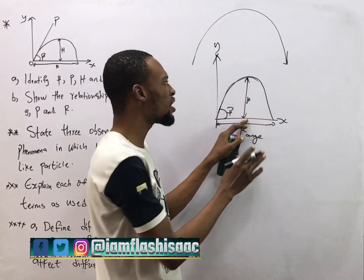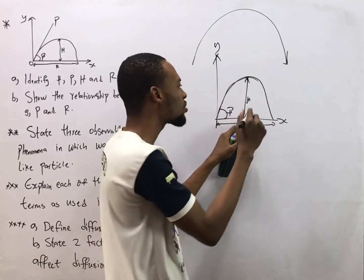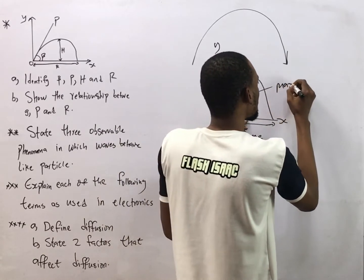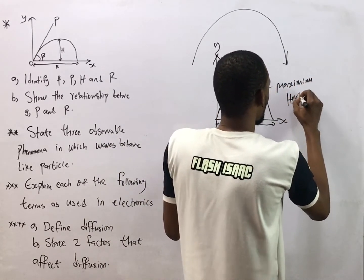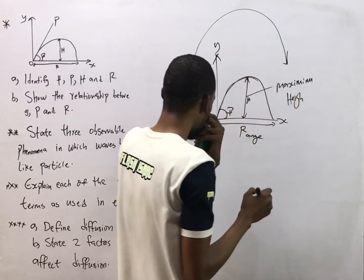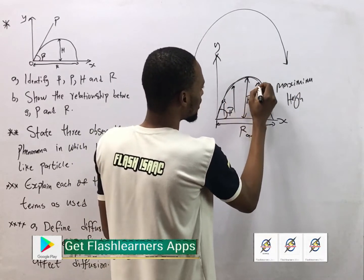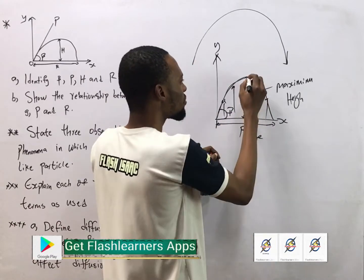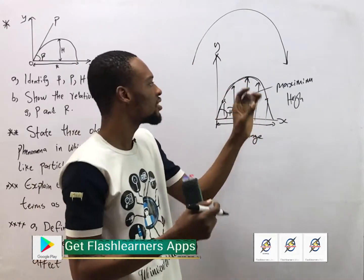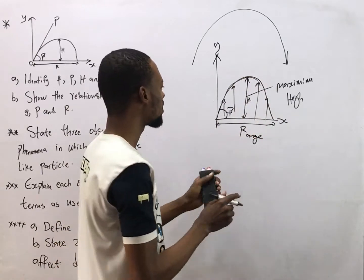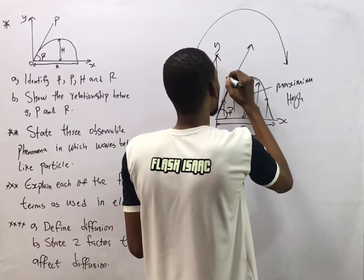From the starting point to this place, this is obviously the height — the maximum height of the projectile. This is the maximum height, the highest point the object gets to. Now we have p here — p is simply the velocity of the projectile.